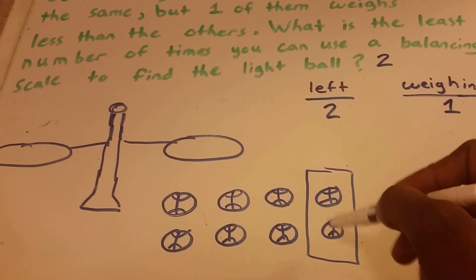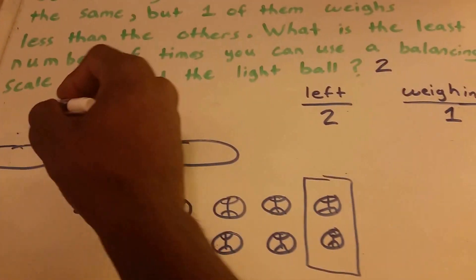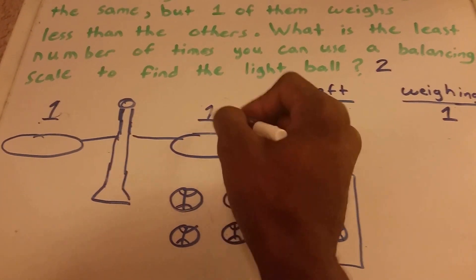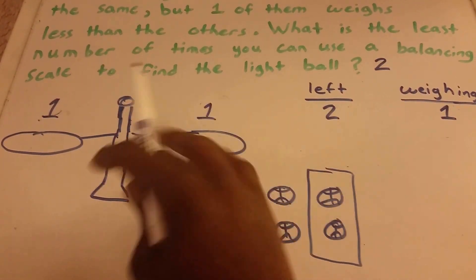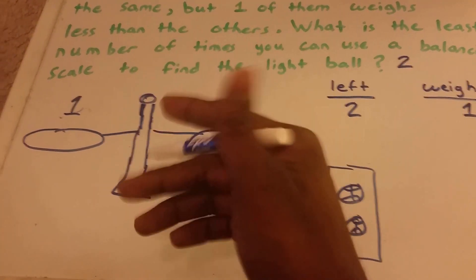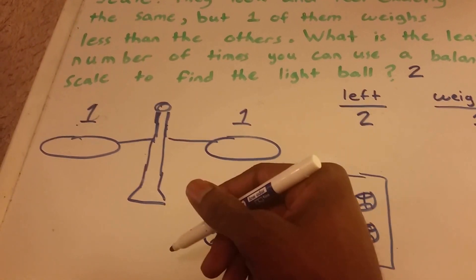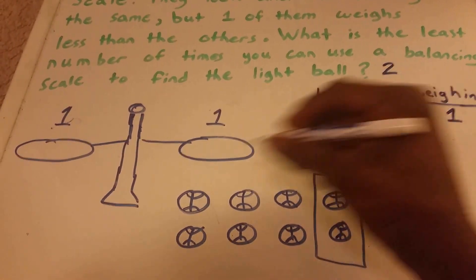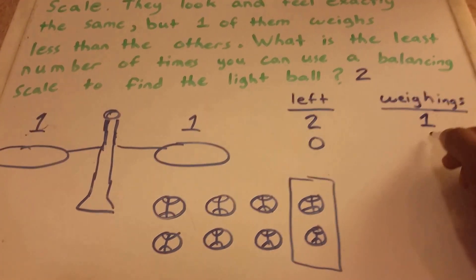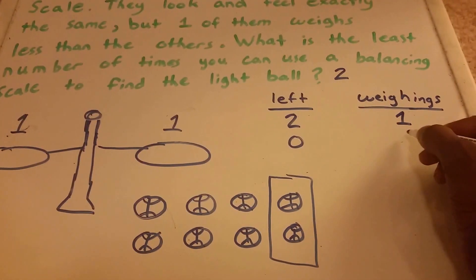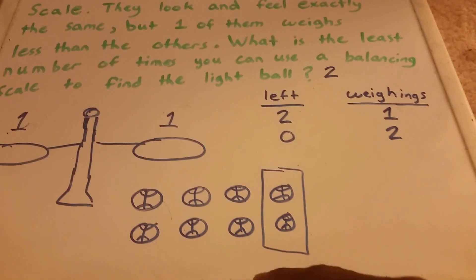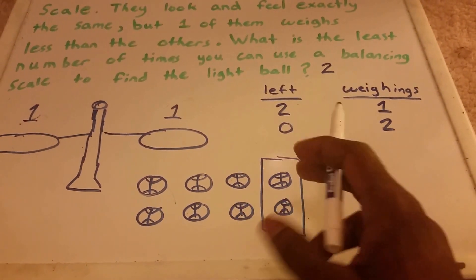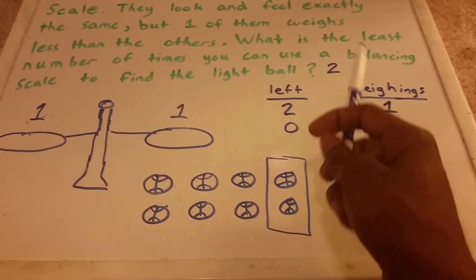Now we know the light ball is one of these two. We put one ball on each side and one of them weighs more than the other — zero balls left. That was our second weighing. That gives us our two!